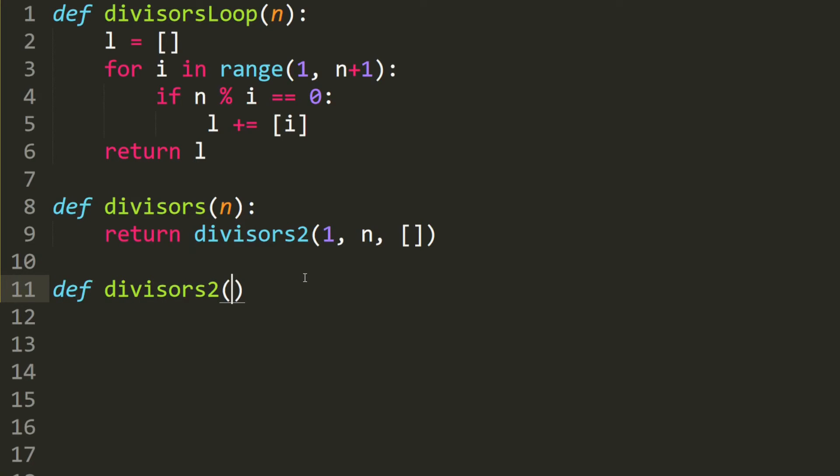Next, we define the divisors 2 function. The first parameter is i. The second one is n. And then we have the list l. The base case is that if i is larger than n, then we return the l.